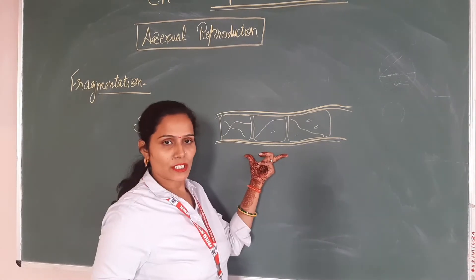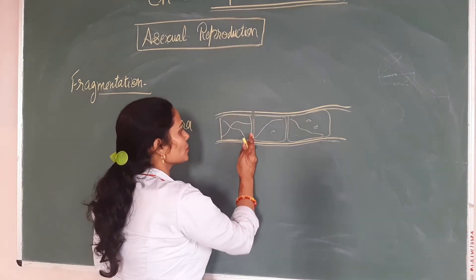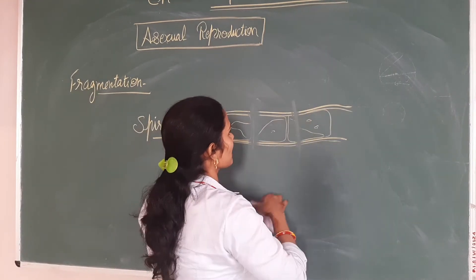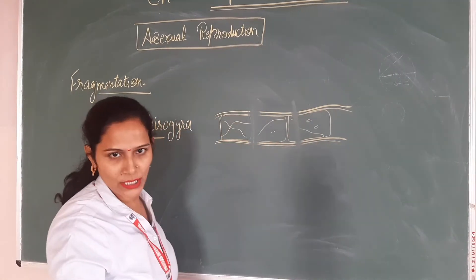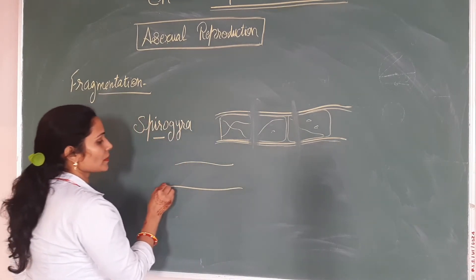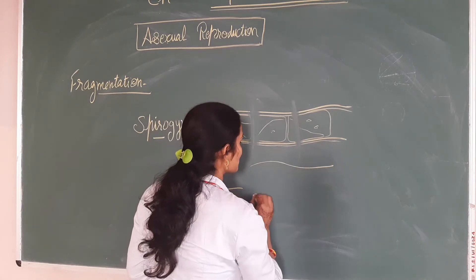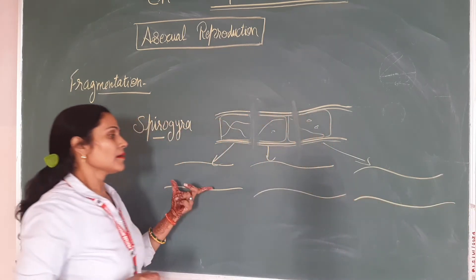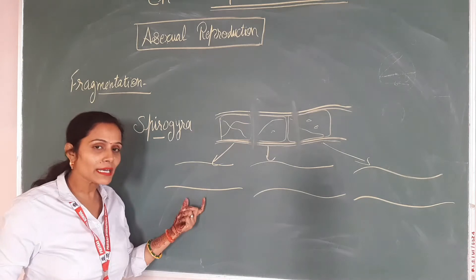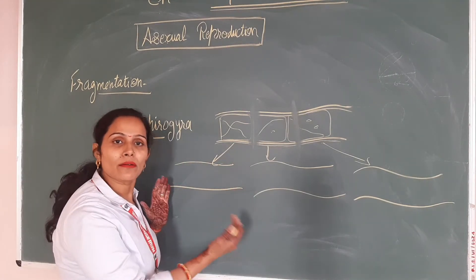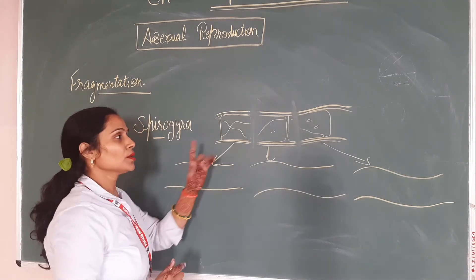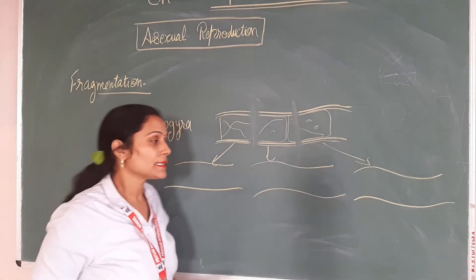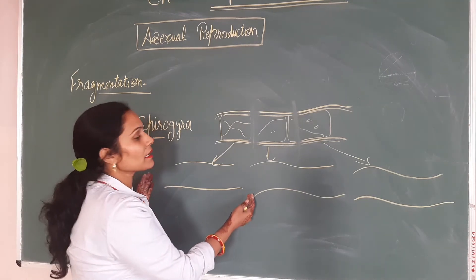When mature Spirogyra breaks, it divides into small fragments. These small fragments then grow and develop into mature fragments. These small pieces grow into new Spirogyra and eventually make mature Spirogyra.